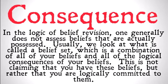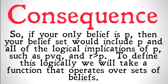This is not claiming that you have these beliefs, but rather that you are logically committed to them. This may have some problems with people who don't necessarily believe in the laws of classical logic — perhaps skeptics with no beliefs, or those who believe in non-classical logic. But taking this as a general generic dogmatist that believes in classical logic, we can move forward. If your only belief is P, then your belief set would include P, all of the logical implications of P, as well as all of the laws of logic or tautologies — things like P or Q, R implies P, and so on.